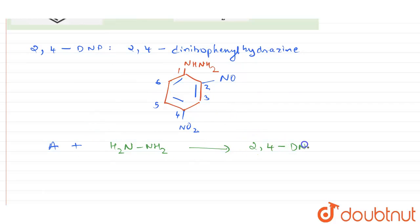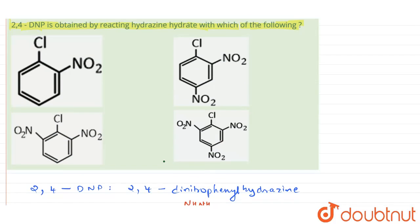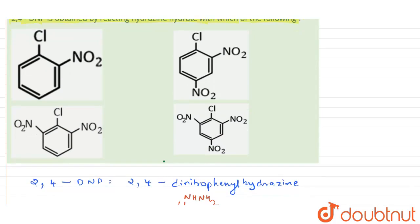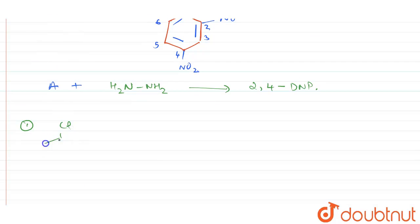So what is this starting material A we need to find out. So what we can do is take one by one each of the options which are given to us. That is, first is given as Cl, NO2 and benzene ring.